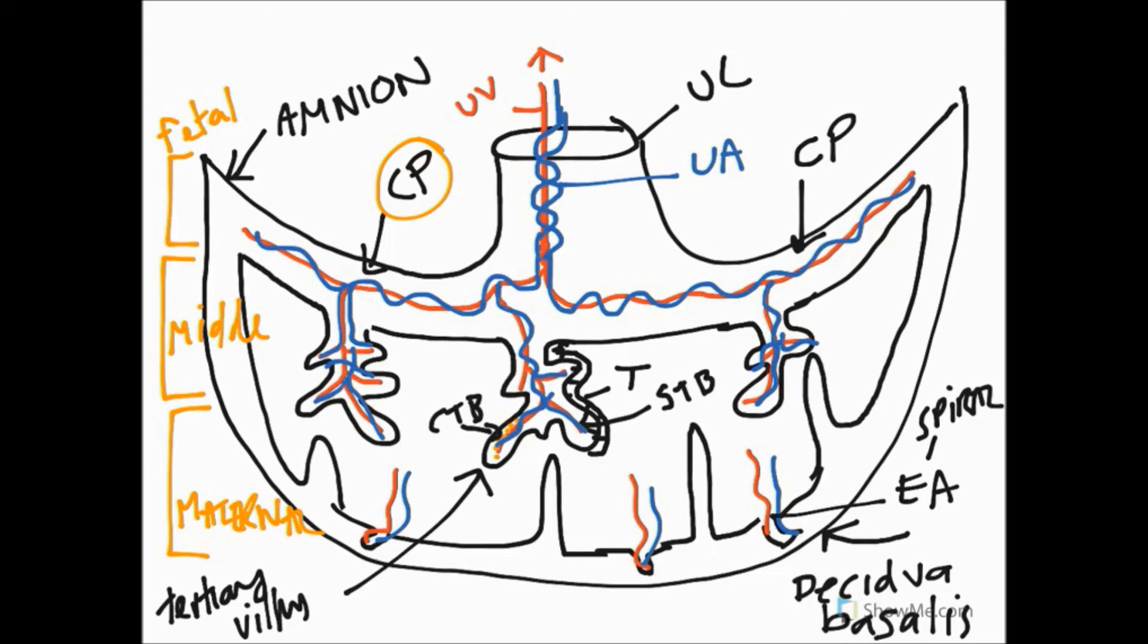Okay, so hopefully that will give you a very sort of brief outline of the structures of the placenta and how the different parts, both the fetal and the maternal parts, come together for exchange of nutrients and oxygen.